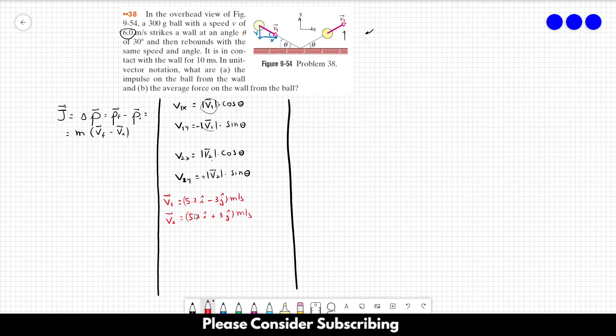Those are the velocities that we have. We just need to replace them over here and then we get our answer. So the impulse is going to be mass, which is 300 grams, so this gives us 0.3 which multiplies 5.2 in the i direction, minus, sorry, it's the other way around, so it's v2 first, but it was the same number, plus 3j minus...